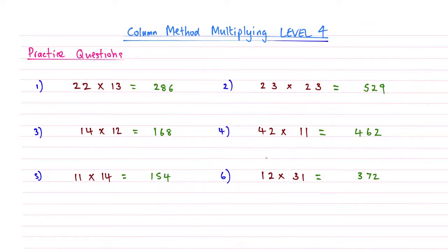Welcome to the answer walkthrough video for column method multiplication level 4. Here are your quick answers: number 1 is 286, number 2 is 529, number 3 is 168, number 4 is 462, the answer to number 5 is 154, and the answer to number 6 is 372.